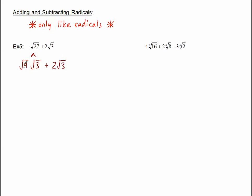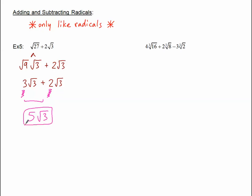The square root of 9 is a perfect square, so that becomes 3, and the square root of 3 is still just attached to it. And of course there's 2 square roots of 3 we haven't done anything with. But now look at this — now we both have radicals that have the same radicands. So now I can take their coefficients, the 3 and the 2, combine them together to make 5 square roots of 3. And I've simplified it. I can only add when the radicands and the indices are the same.